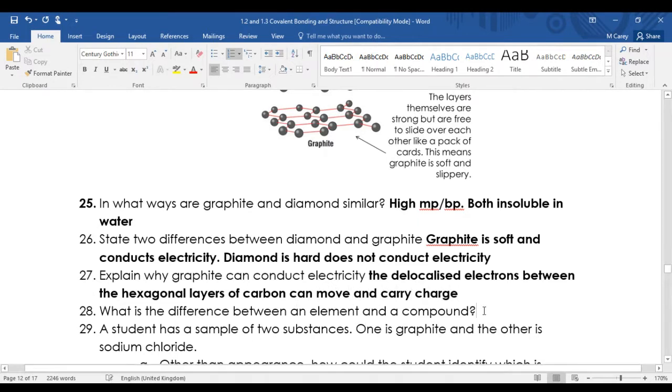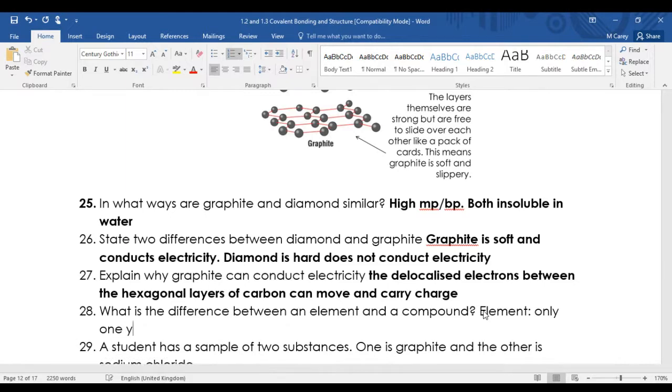What's the difference between elements and compounds? Elements have only one type of atom. Compounds have two or more different types of atoms or elements.